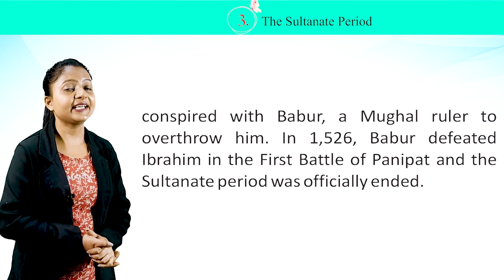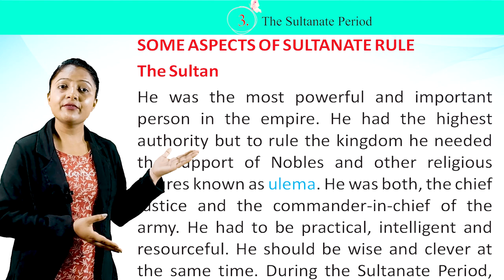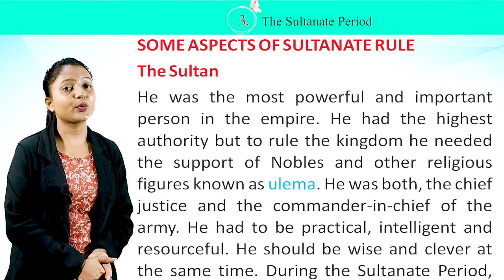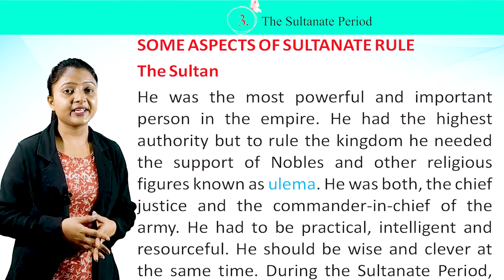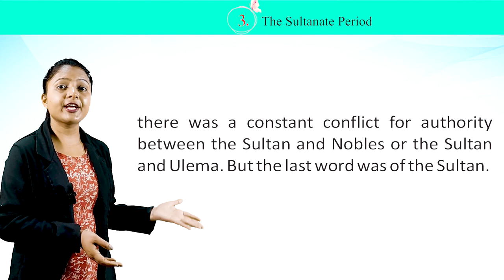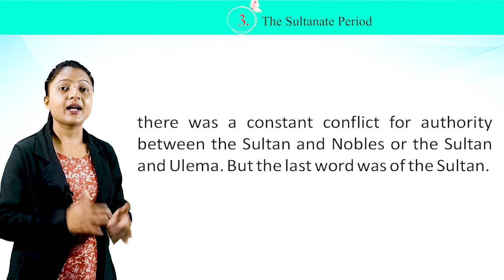Some aspects of Sultanate rule: The Sultan was the most powerful and important person in the empire. He had the highest authority but needed the support of nobles and religious figures known as Ulema to rule. He was both the chief justice and commander-in-chief of the army. He had to be practical, intelligent, resourceful, wise, and clever. During the Sultanate period, there was a constant conflict for authority between the Sultan and the nobles or the Ulema, but the last word was always the Sultan's.